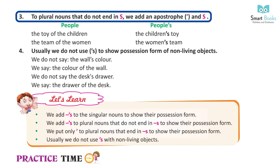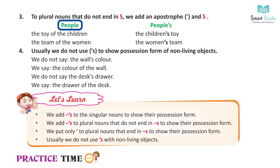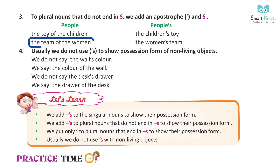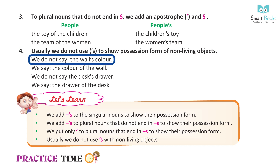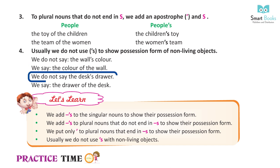Rule 3 — to plural nouns that do not end in 's', we add an apostrophe and 's'. Examples: the children → the children's; the toy of the children → the children's toy; the team of the women → the women's team. Rule 4 — usually we do not use the possessive form for non-living objects. We do not say 'the wall's color'; we say 'the color of the wall'. We do not say 'the desk's drawer'; we say 'the drawer of the desk'.